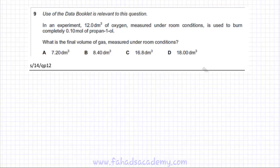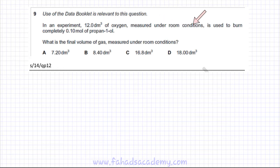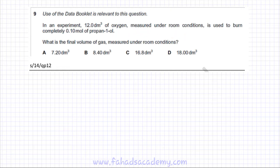In this question, there's an experiment where 12 dm³ of oxygen measured under room conditions is used to burn completely 0.1 moles of propanol. The question is asking what is the final volume of gas measured under room conditions. The question is basically asking about combustion.